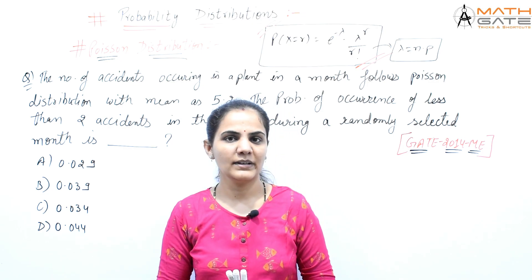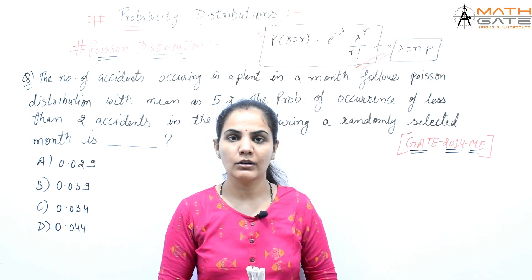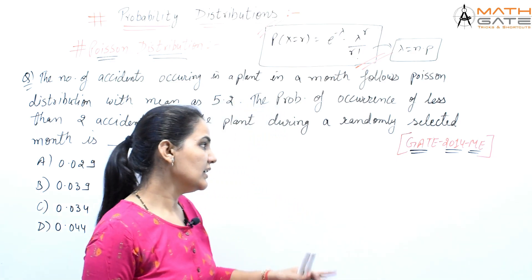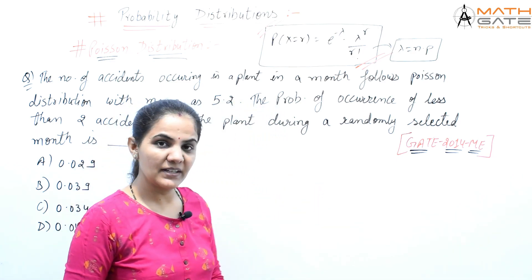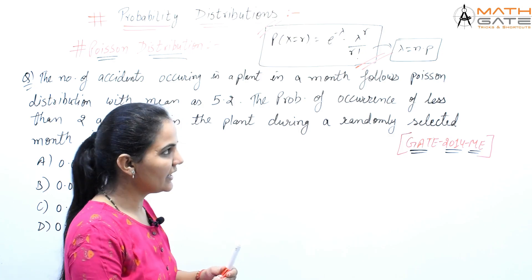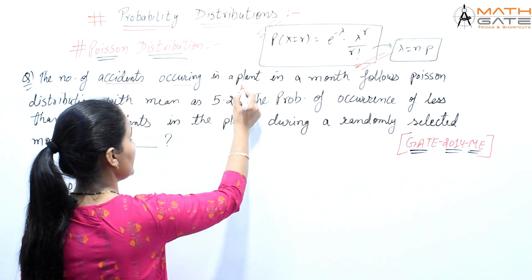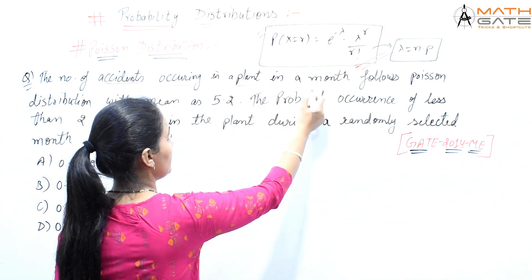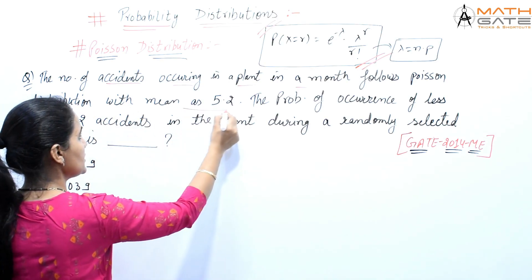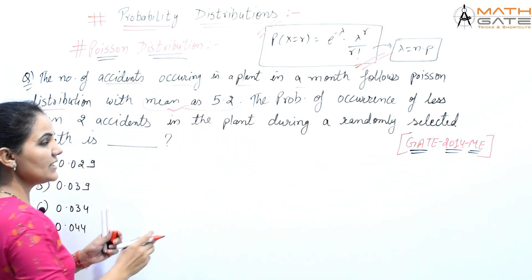Hello students, welcome to Math GATE. Let's discuss GATE problems based on Poisson distribution. This question has been asked in GATE 2014 Mechanical branch. The number of accidents occurring in a plant in a month follows Poisson distribution with the mean as 5.2. The important thing is mean is given as 5.2.